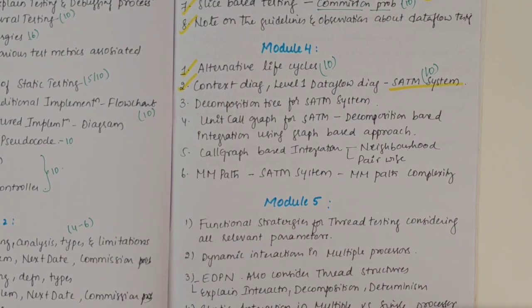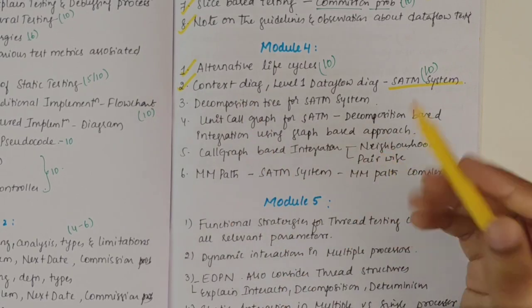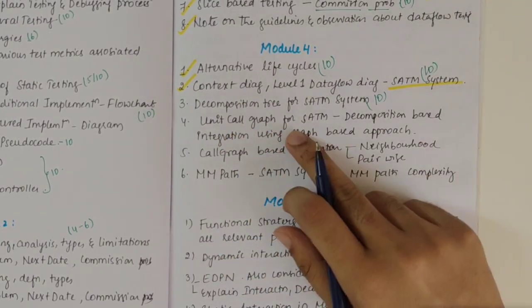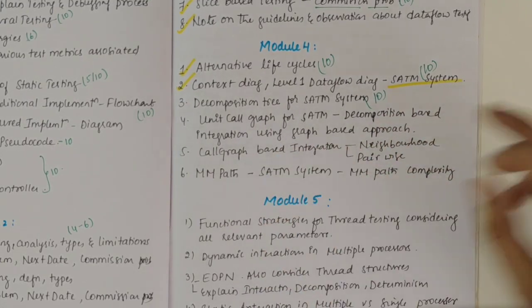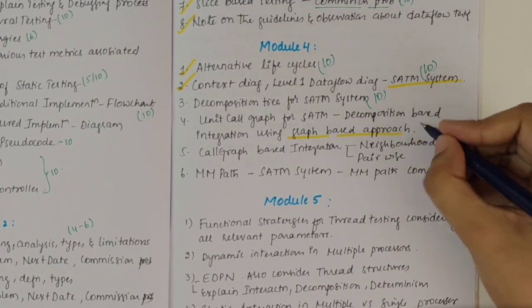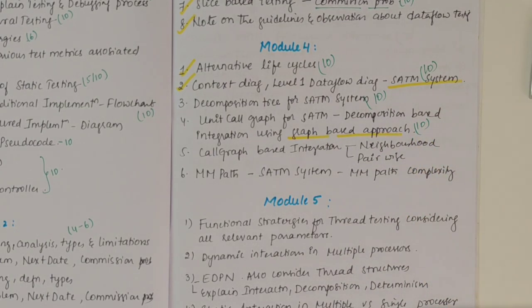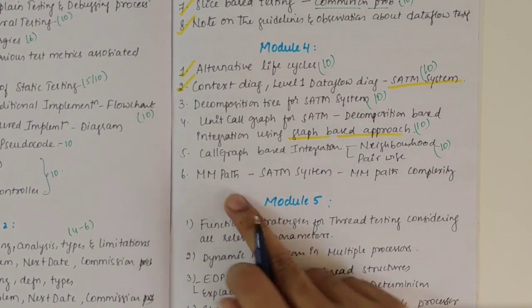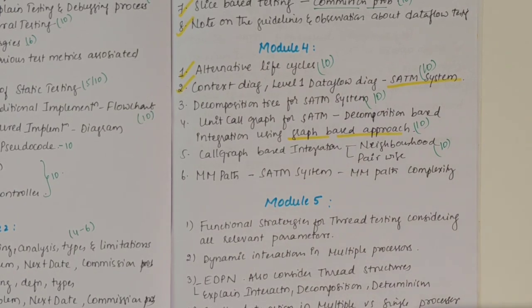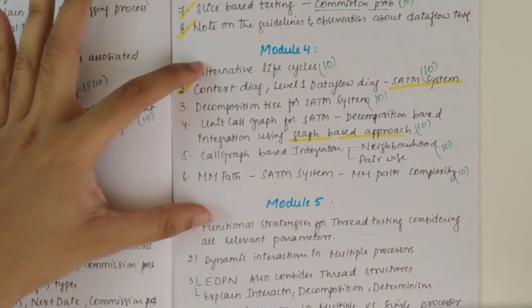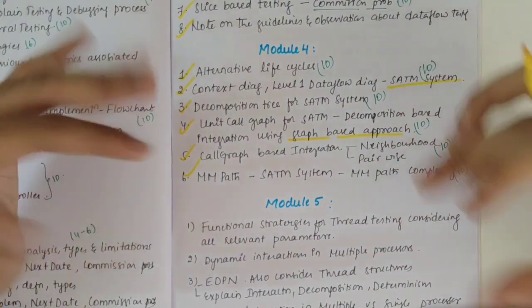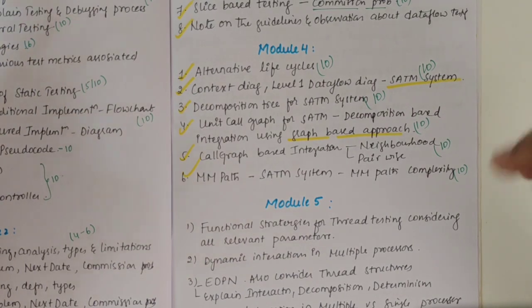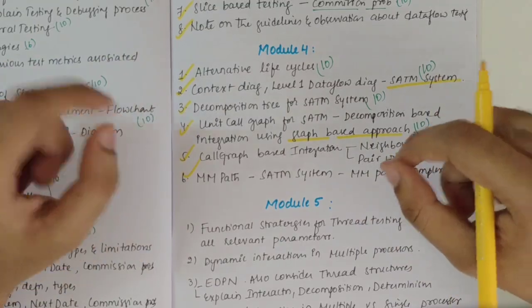From what I've seen in internals, there is mostly one testing question and one theory question covering topics like advantages, disadvantages, assumptions, or write-a-note questions. Next, we have the decomposition tree for SATM — 10 marks for sure. Then the unit call graph for SATM and decomposition-based integration using a graph-based approach — 10 marks. Then call graph-based integration, neighborhood and pairwise definitions, and implementation — also 10 marks. Then MM path definition, MM path complexity, and MM path application in the SATM system. If you cover these six questions in the fourth module, you'll be thorough.